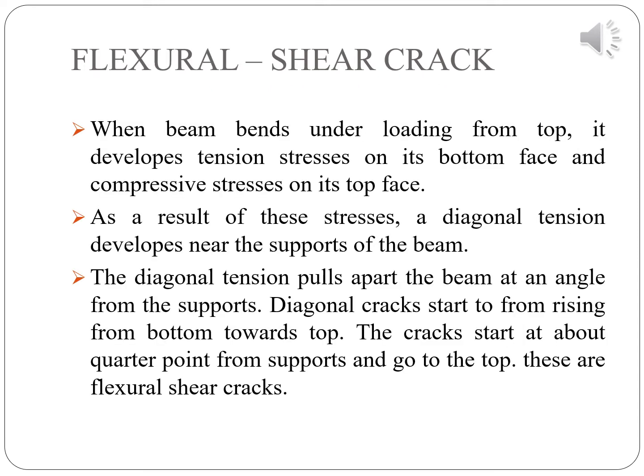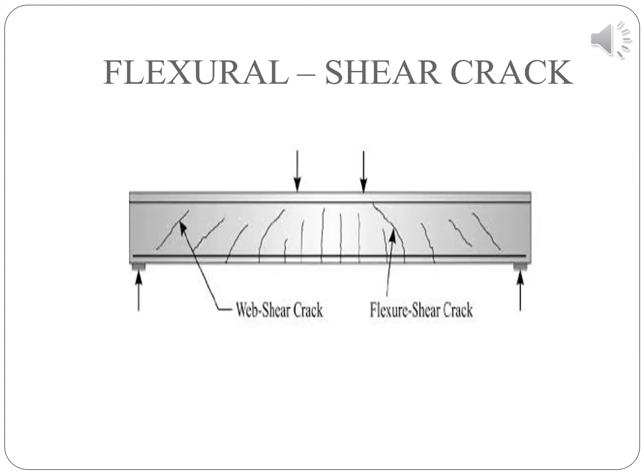The second type is flexural shear cracks. When a beam bends under loading from the top, it develops tension stresses on its bottom face and compressive stresses on its top face. As a result of this stress, a diagonal tension develops near the support of the beam, pulling apart the beam at an angle from the support. Diagonal cracks start rising from the bottom towards the top, beginning above the quarter point from the support. These cracks are called flexural shear cracks. This picture shows the flexural shear cracks.